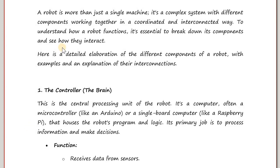A robot is more than just a single machine. It is a complex system with different components working together in a very coordinated and interconnected way. To understand how a robot functions, it is important to understand its various components and thereafter understand how these components interact or talk with each other. Let us see the different components, talk about them with examples as well as their interconnections.